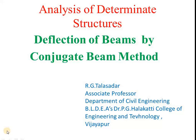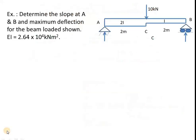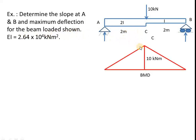Hello everyone. Now let us solve some more problems by the conjugate beam method. So this is the problem: determine the slope at A and B and maximum deflection for the loaded beam as shown in the figure. Here the values of E and I are given. If you draw the bending moment diagram, you know that it is simply a beam carrying a point load at the center. So the bending moment diagram is just WL by 4, which becomes 10 kNm.